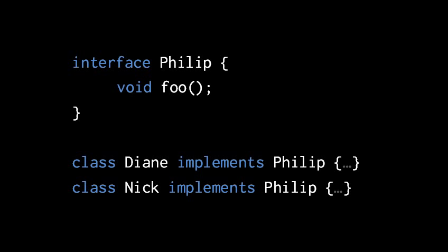Once we create an interface, we can declare that a class implements an interface. When a class implements an interface, it is required to have a definition for each one of the methods listed in the interface. So Nick and Diane must both implement a method foo that takes no parameters and returns void. If they didn't, the compiler would complain that they don't properly implement Philip.